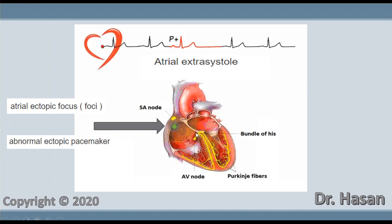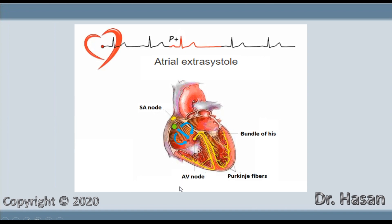Since the excitation does not begin in the sinus node, it does not follow the normal conduction pathways of the atria. Accordingly, the P wave will have a different shape than the other P waves of sinus origin. However, when the excitation from the atria reaches the AV node, it then travels along the normal pathways — along the bundle of His and its branches. Because of that, the QRS complex in atrial extrasystole does not change at all; all QRS complexes will be the same.